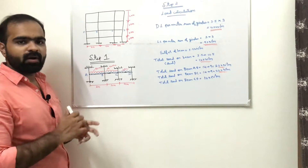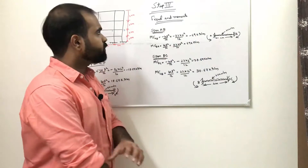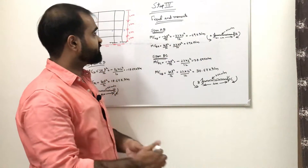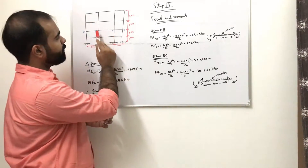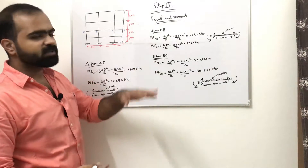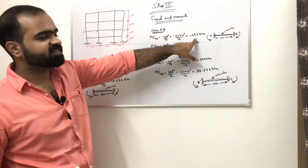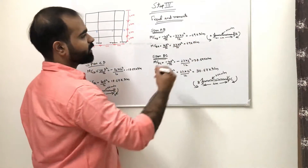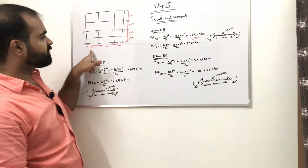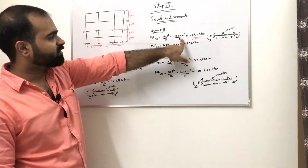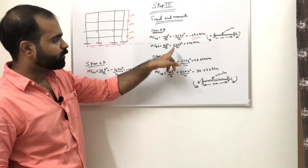Step number 3 is fixed end moments. For span AB: MF_AB = −WL²/12 = −23 × 6²/12 = −69 kNm. MF_BA = +WL²/12 = +69 kNm. The length of AB is 6 m.